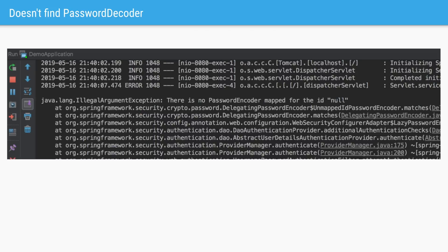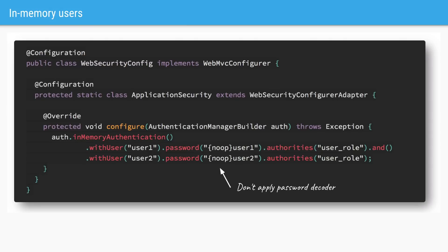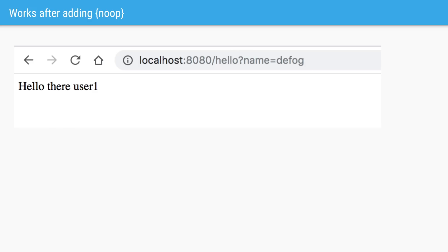But login will fail and we'll get an error in the console. That's because it's highly recommended never to store passwords in plain text as it's insecure. Since we are doing this for demo and learning purposes with in-memory authentication, we can prefix our passwords with the special string {noop}. This tells Spring Security that this is a plain text password and not a hashed version of the original password. Now when we restart the server and try to login with user1, we'll have a successful login.